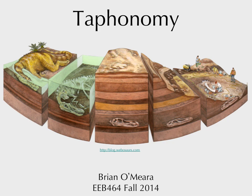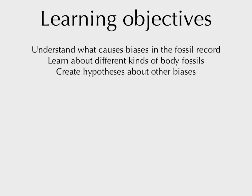So today we're talking about taphonomy. Anyone know what taphonomy is? It looks like fossils — good guess — but not quite. It's looking at the process of how things fossilize and how biases occur in that process. Learning objectives for today: understand what causes biases in the fossil record, learn about different kinds of body fossils, and create hypotheses about other biases that might occur.